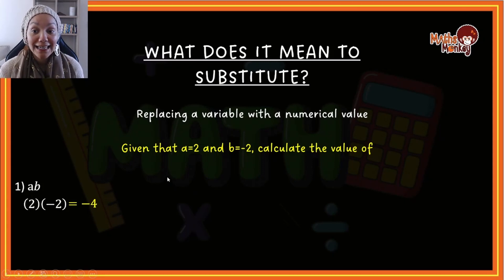So what have I done? I have calculated the value of ab if a is equal to 2 and b is equal to negative 2. In other words, wherever I see a in an expression, I'm going to replace it with 2, and wherever I see b I'm going to replace it with negative 2.